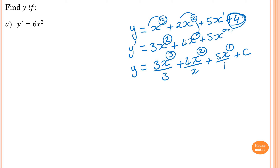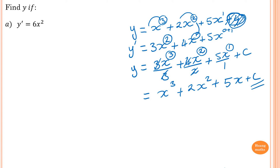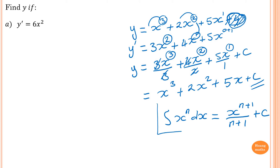Always add C for a primitive function. Simplifying: the 3s cancel to give x cubed, the 2s cancel to give 2x squared, and 5 over 1 is 5x, plus C. The general rule is: the integral of x to the power n dx equals x to the power n plus 1, divided by n plus 1, plus a constant. This is the rule for finding primitive functions, or integration, or anti-derivatives.